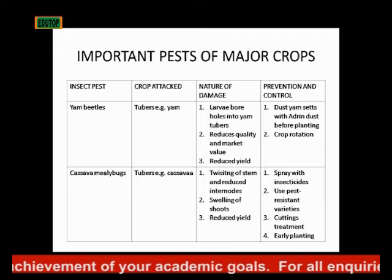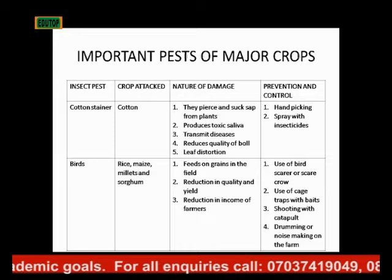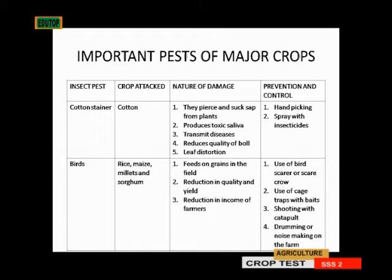Another category of insect pests is the cotton stainers. They attack the cotton, pierce and suck from plants, they produce toxic saliva, they transmit diseases, they reduce the quality of the boll, and they cause leaf distortion.